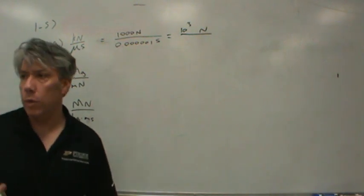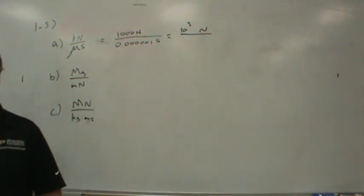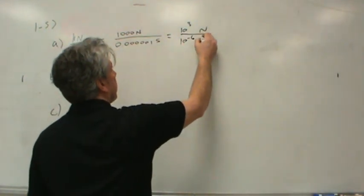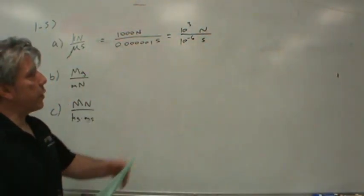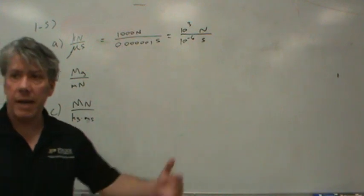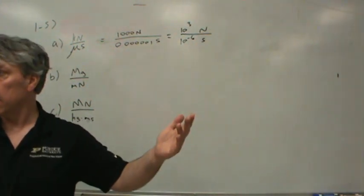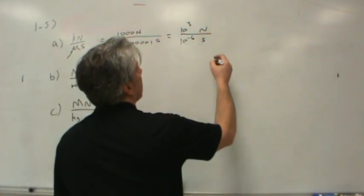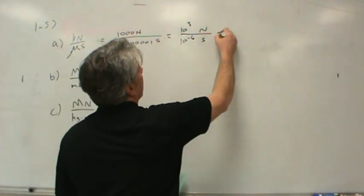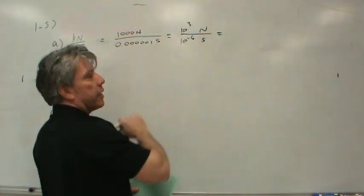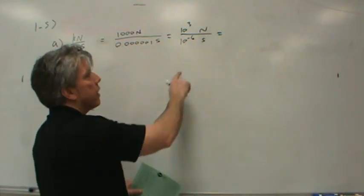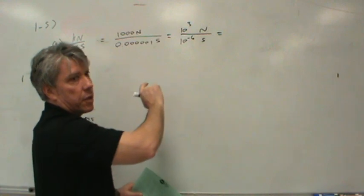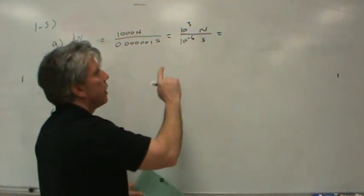How about a micro? Six decimals. Negative six. Ten to the negative six. Now, when I've got ten to the third on top and ten to the negative six on bottom, how do I get those two together, or can I? All we've got to do is add the exponents together, except that this is a negative exponent because it's in the denominator. It's on the bottom, so it'd be switched in.